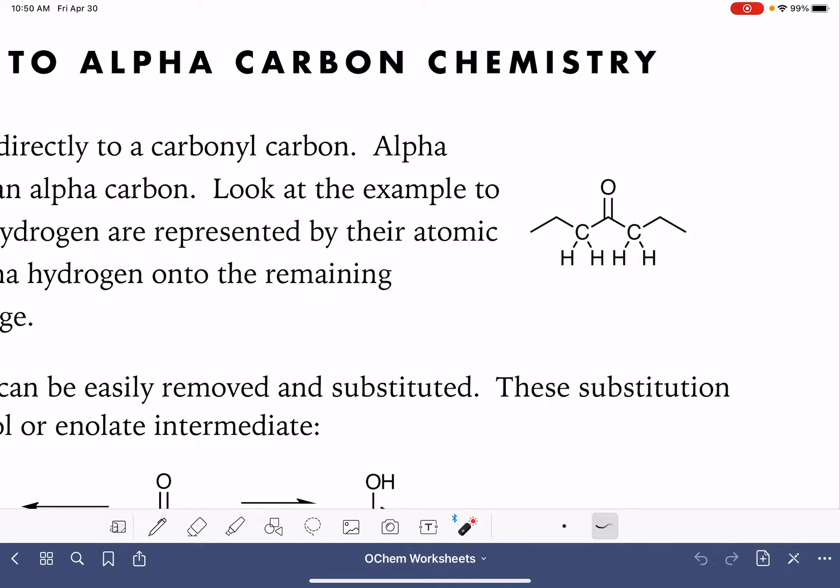This notation alpha is referring to a common non-IUPAC, non-systematic method of numbering the carbon chain. One option that we have for numbering the carbon chain is to use Greek letters alpha, beta, gamma, delta, etc. And you start at the position directly adjacent to the carbonyl group.